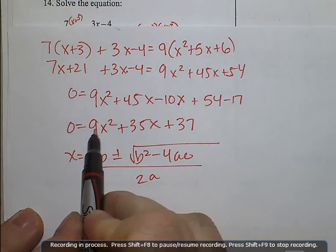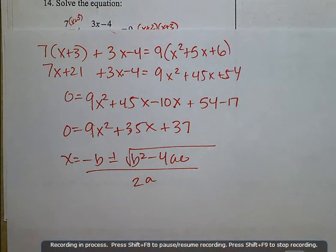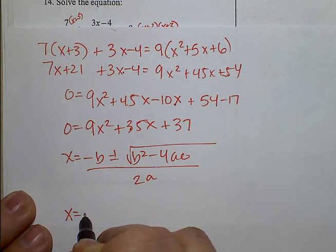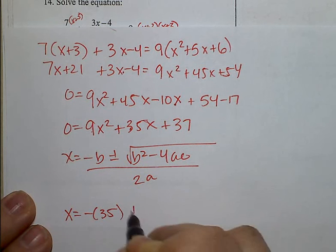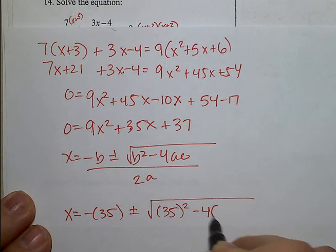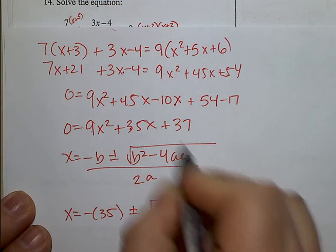A, B, and C. So B is 35. A is 9. C is 37.